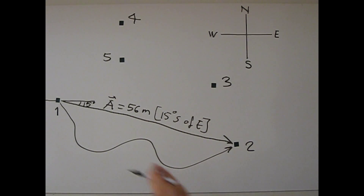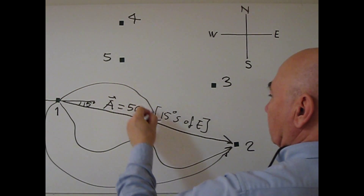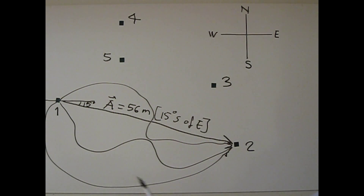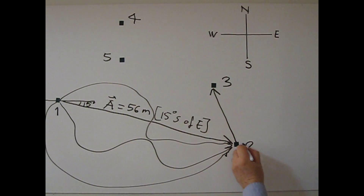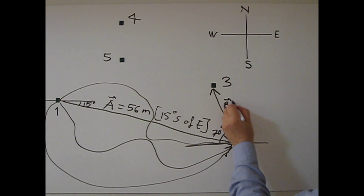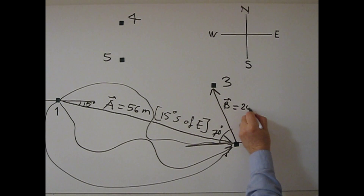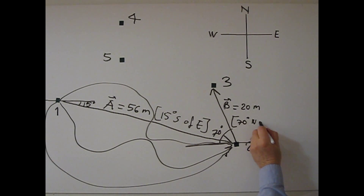It doesn't matter how I walk from here to here, which route I follow — even this way is okay, or I walk this way. It doesn't matter, as long as my initial position and final position do not change. From point 2 to point 3, I draw a parallel west-east line. This angle is 70 degrees, and I call this vector B, with a distance of 20 meters, 70 degrees north of west.